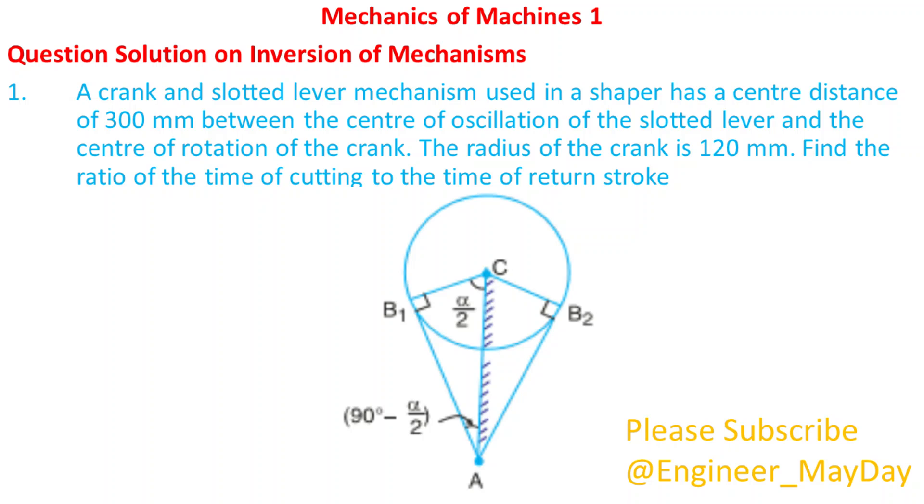A crank and slotted lever mechanism used in a shaper has a center distance of 300 millimeters between the center of oscillation of the slotted lever and the center of rotation of the crank. The radius of the crank is 120 millimeters. Find the ratio of the time of cutting to the time of return stroke.